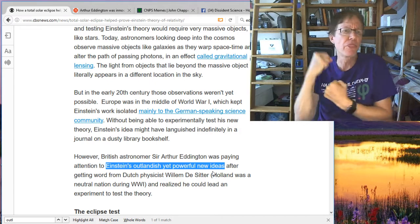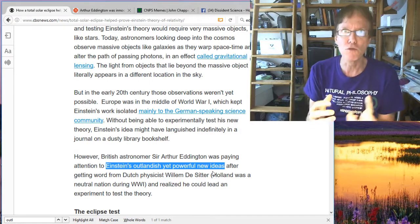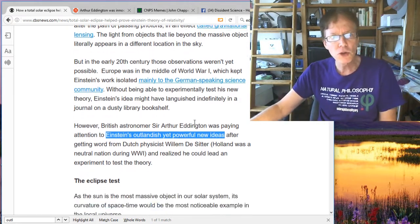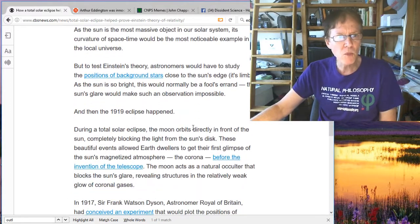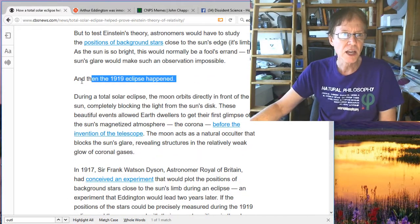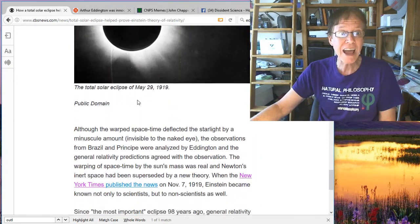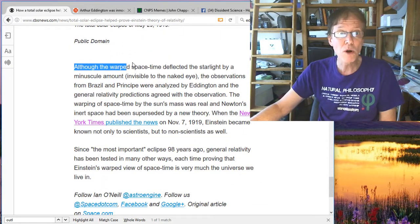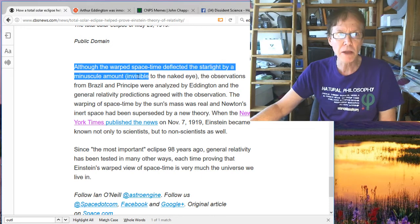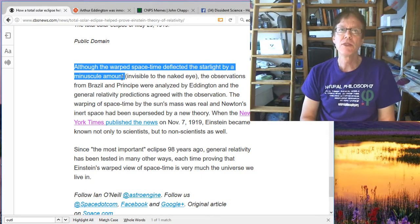So you can see, it's just the way it works. And then they said, of course, then the 1919 eclipse happened. Now, if you look at what they say after that, they'll say, although the warped space-time deflected the starlight by minuscule amounts, of course they're saying that. They don't even qualify that. Well, it's conjectured that warped, there is space-time that warps light, and therefore, invisible to the naked eye.